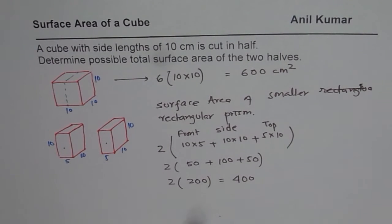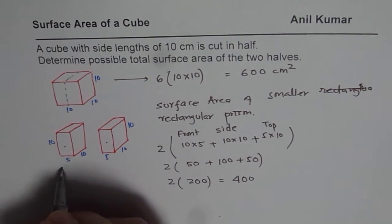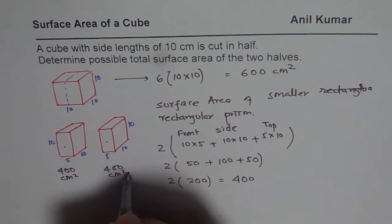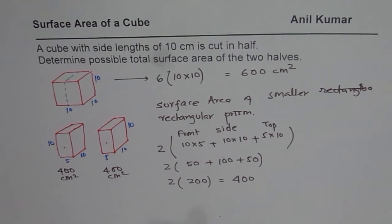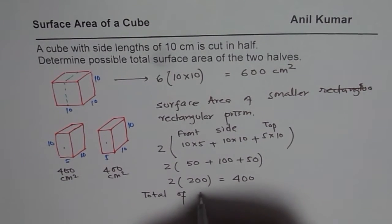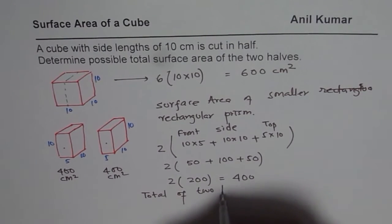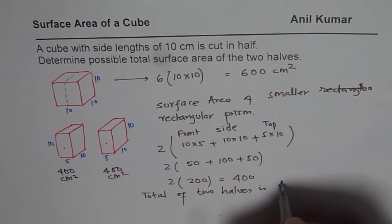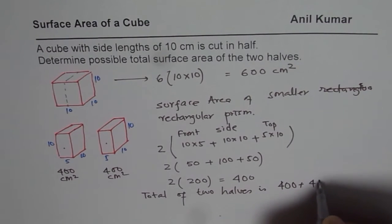So since we have 2 of these, so this is 400 cm square and this is also 400 cm square since both are exactly same. So we get the total of 2 halves is 400 plus 400.